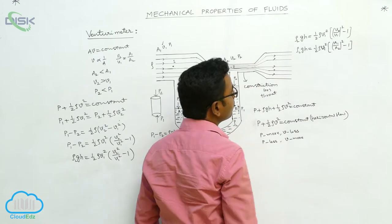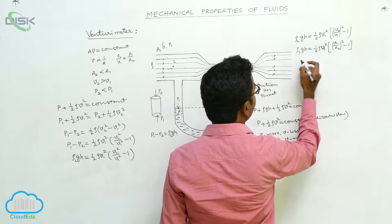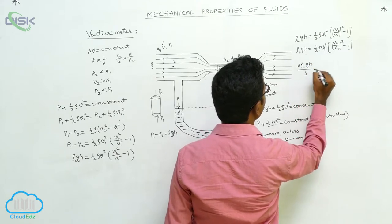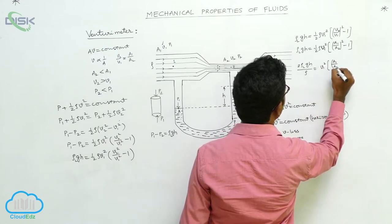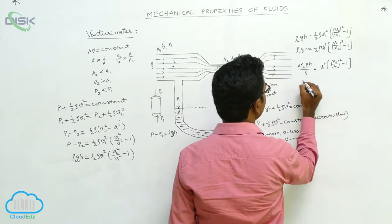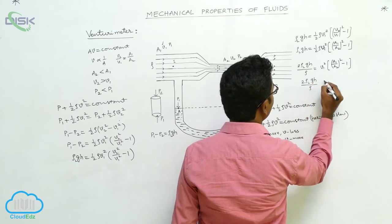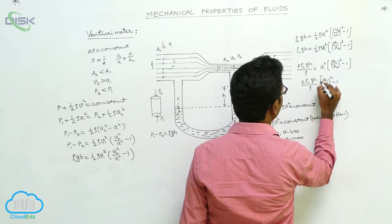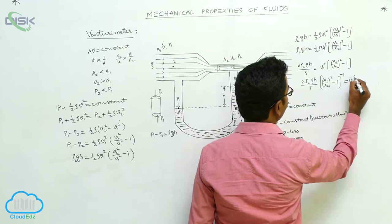Now we have to find V1 value here, taking 2 and rho this side. 2 rho LGH by rho is equals to V1 square into A1 by A2 whole square minus 1. Taking this term this side, so we get 2 rho LGH by rho into A1 by A2 whole square minus 1 whole power minus 1 we can write. This is equal to V1 square.